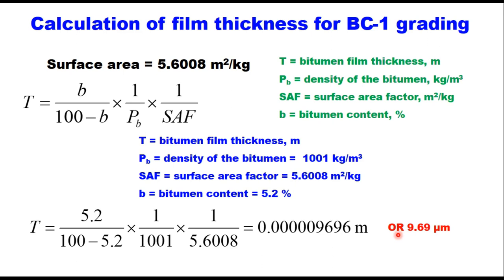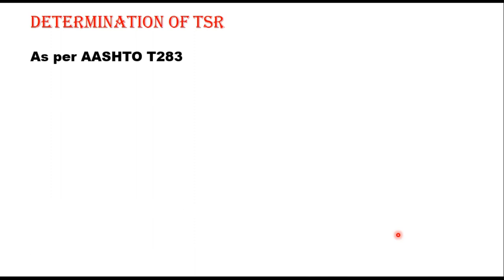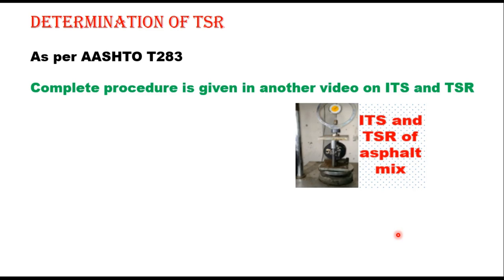Typical film thickness value should be 6 to 8 microns. If the film is too thin, air entering the compacted mix can rapidly oxidize it and the mix can become brittle. The typical recommended value is 6 to 8 microns. However, this is just for verification — binder content is not to be changed based on film thickness as it is still not part of the design. Once the job mix formula is prepared, the next step is to determine the tensile strength ratio (TSR) as per AASHTO T283.